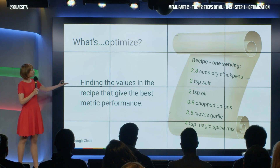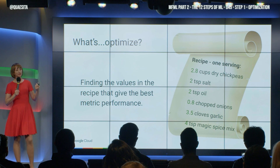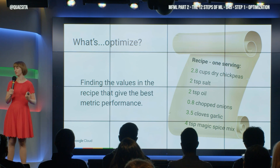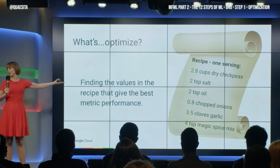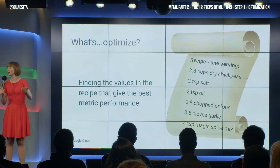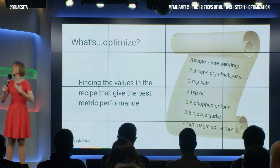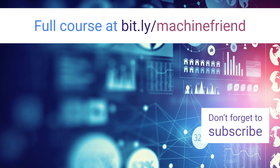Optimization boils down to finding values in the recipe that give our best metric performance. Ideally, we would be working with the metric that the business decision maker cares about, but beggars can't be choosers. We don't feel like reinventing the wheel and rebuilding an algorithm from scratch, so we're going to take an existing one when no one asked us what metric we wanted to work with. And so we will then be optimizing some other functions.